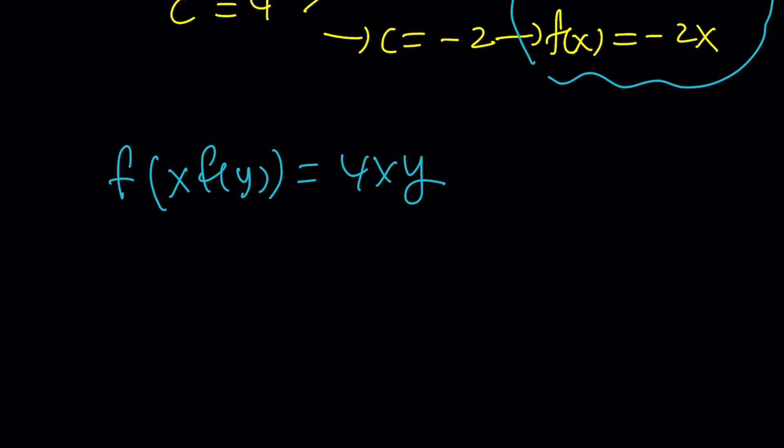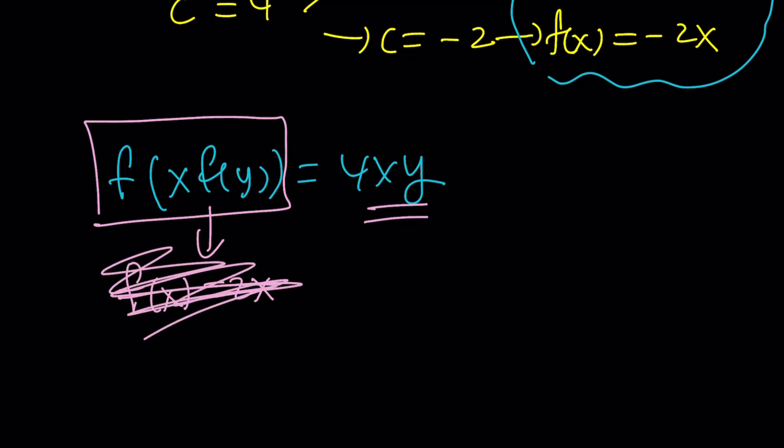Now let me quickly tell you how I came up with this problem. I kind of started with the solution said okay I want f(x) to be 2x. And now what would happen if I set up something like this? I evaluated it. It turns out to be 4xy and then that became a problem. Of course you just have to cover this part and you get a problem.